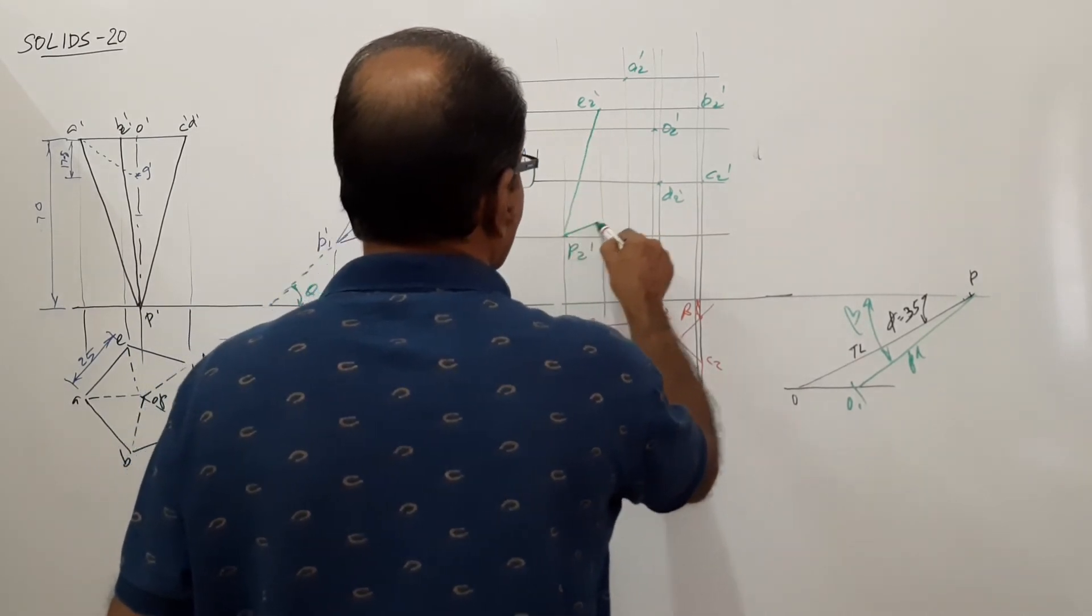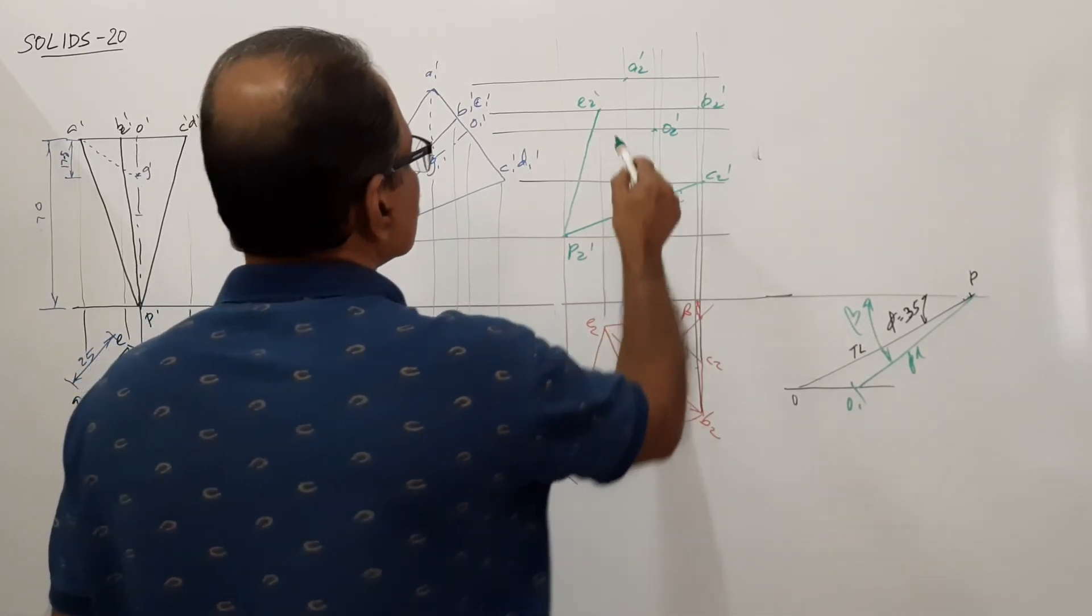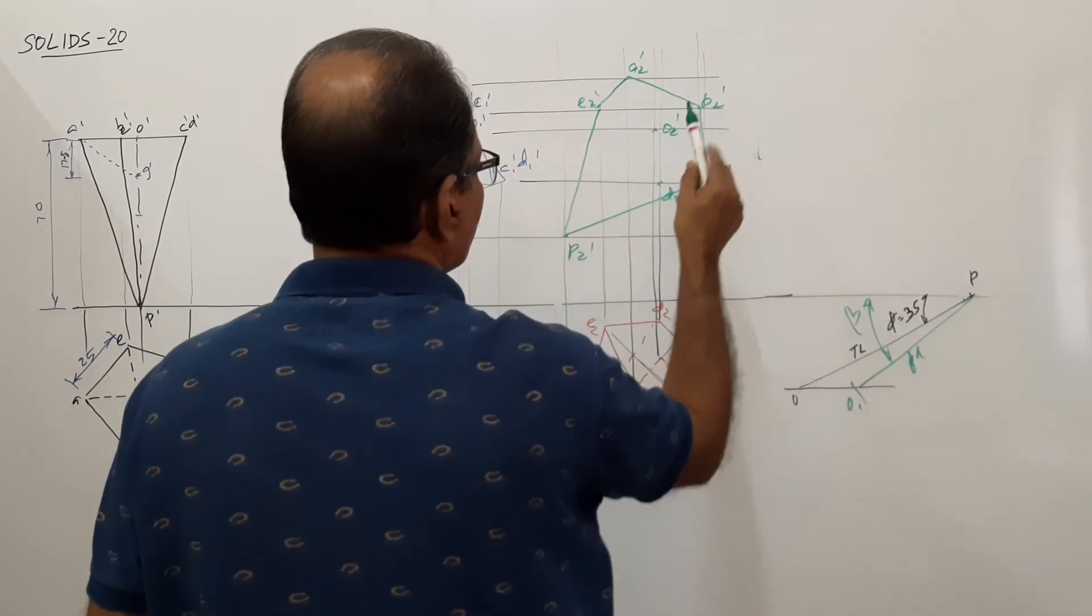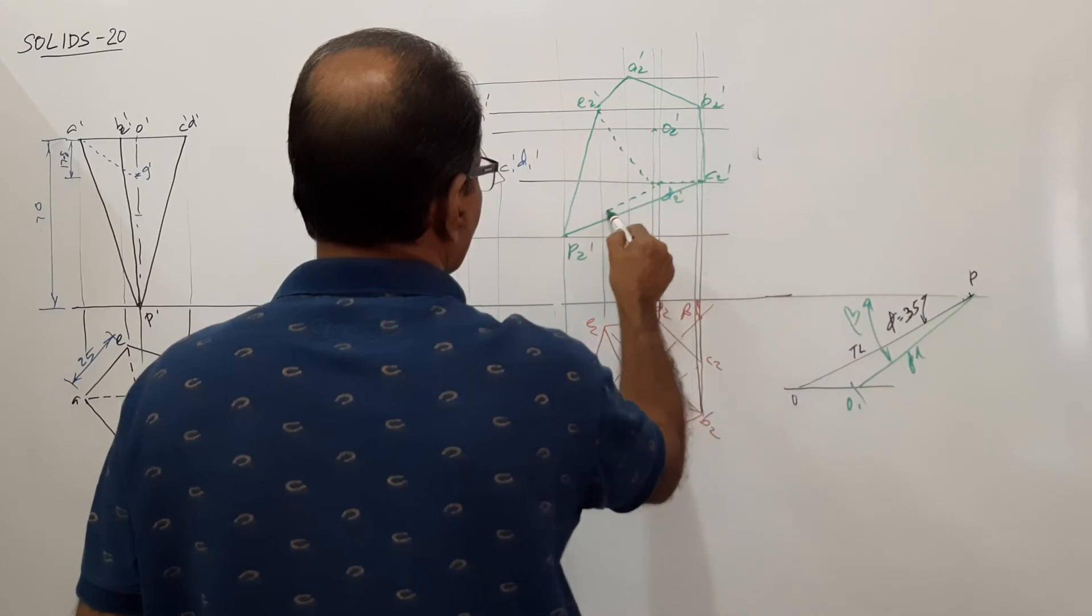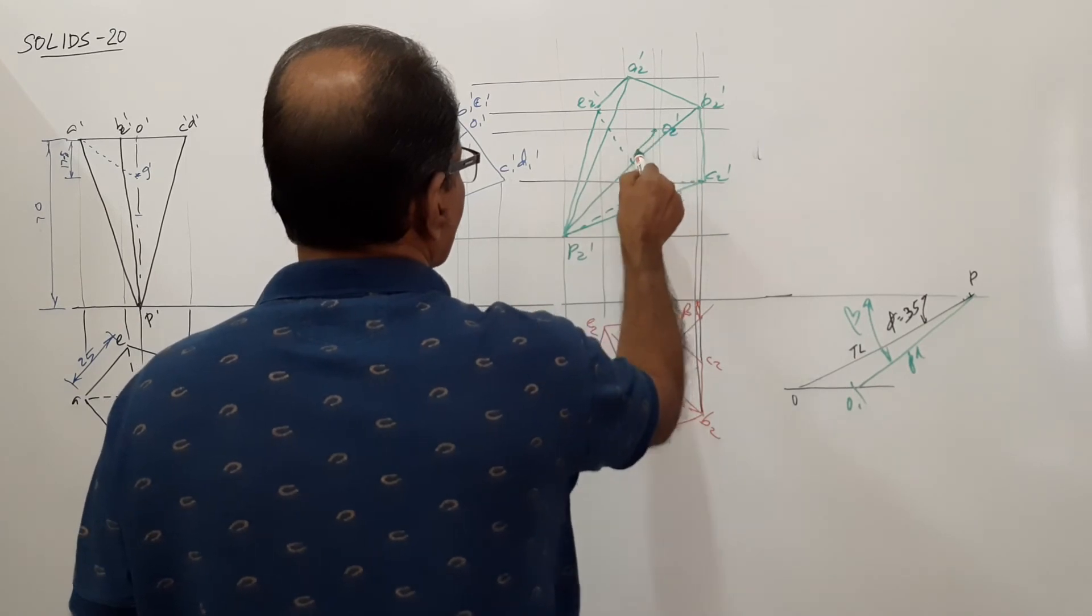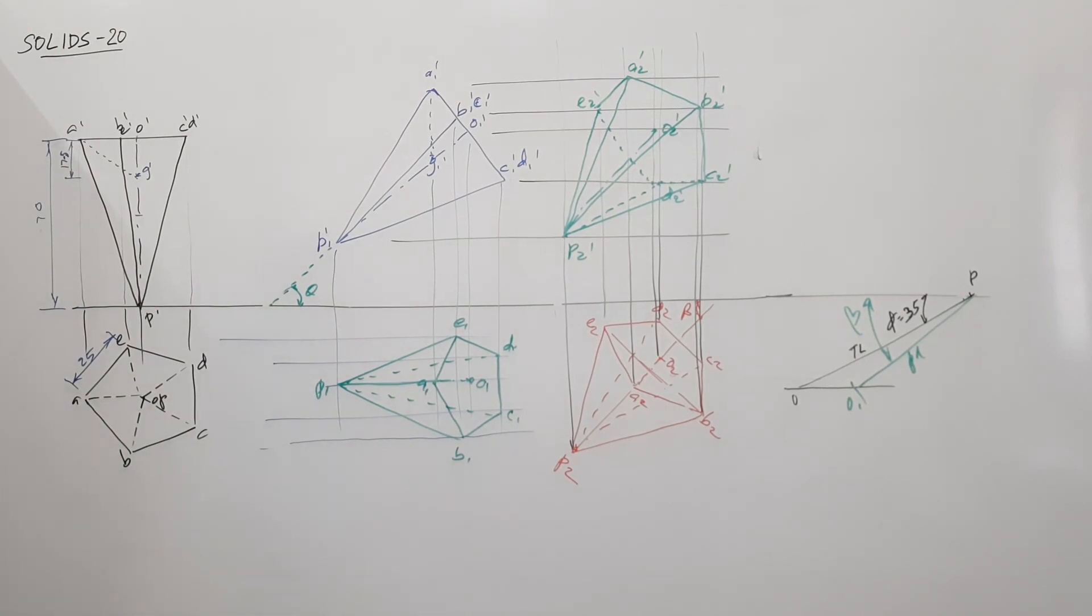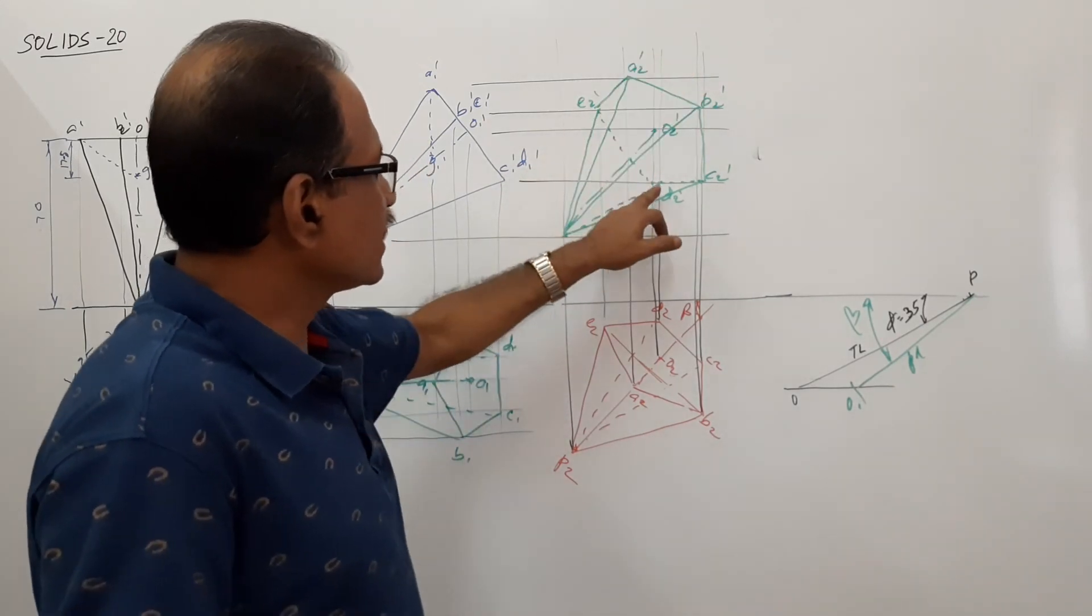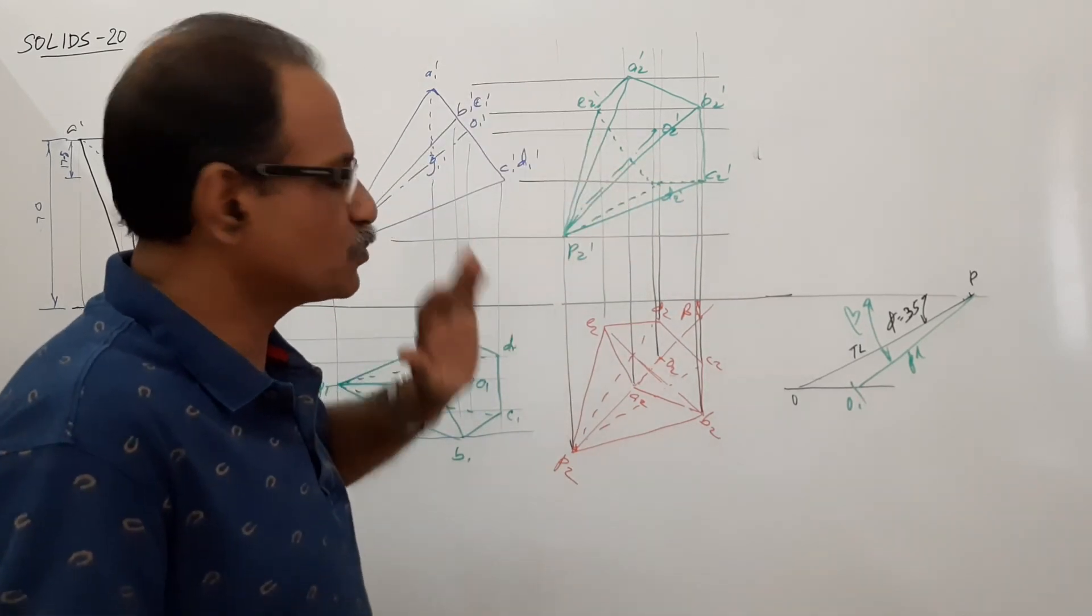Firm lines, dotted lines. The apex is visible. The slant edges to the base are visible. The three lines from P to dash - D to dash, C to dash, D to dash, E to dash, and D to dash, B to dash, in this position will be dotted.